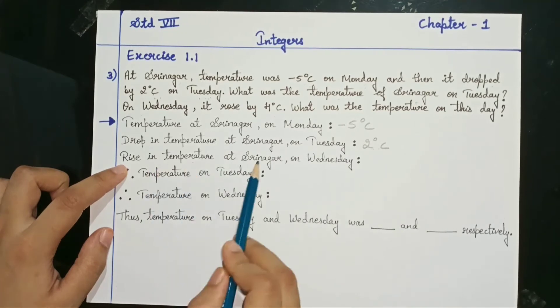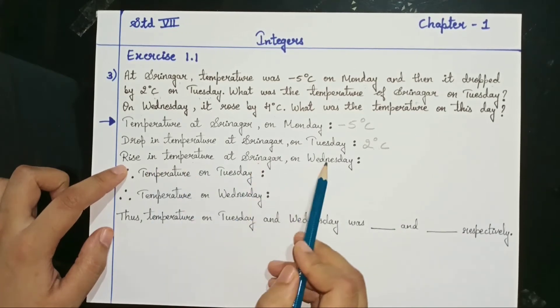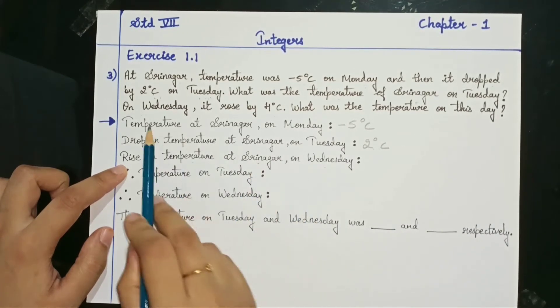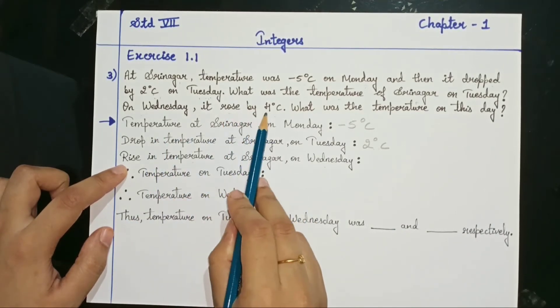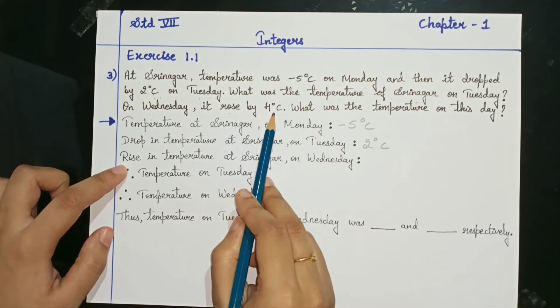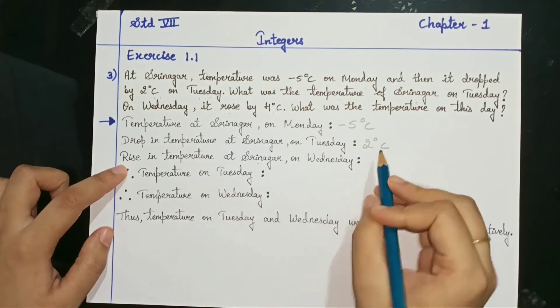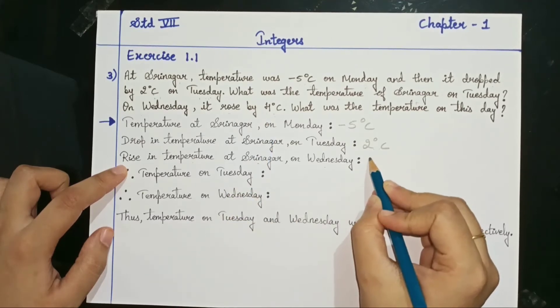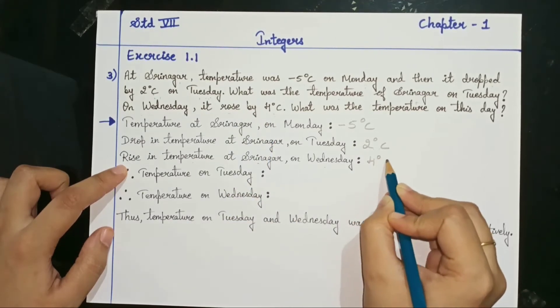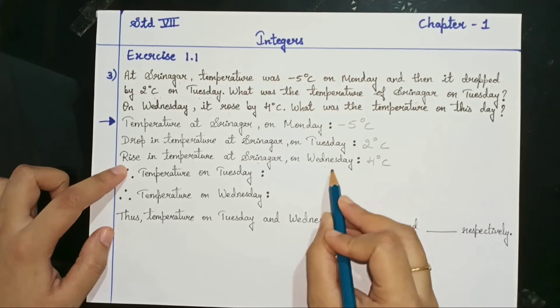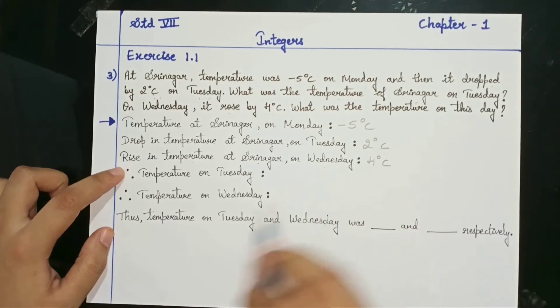Rise in temperature at Srinagar on Wednesday — how much did it rise? It rose by 4 degrees Celsius on Wednesday.